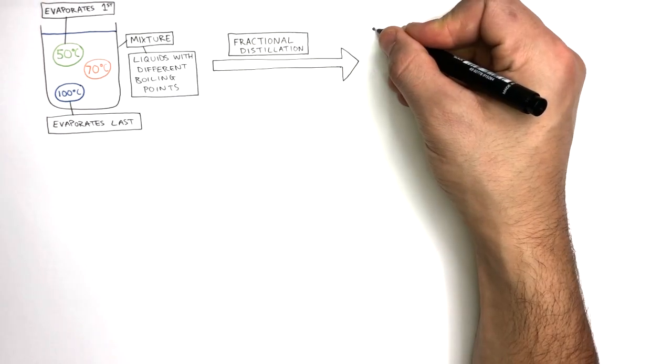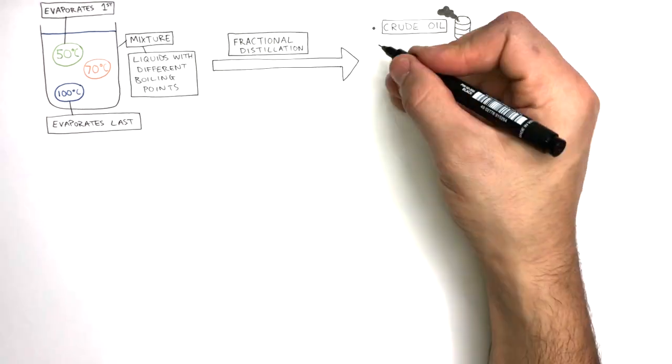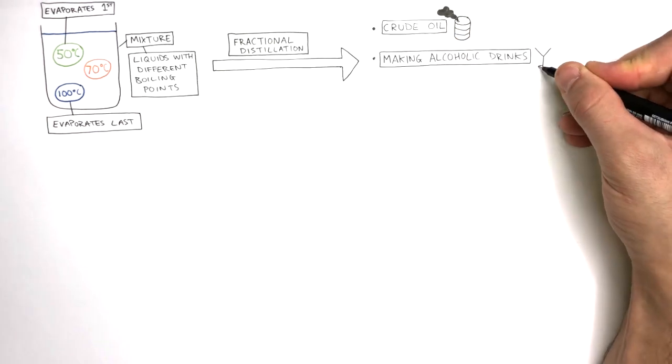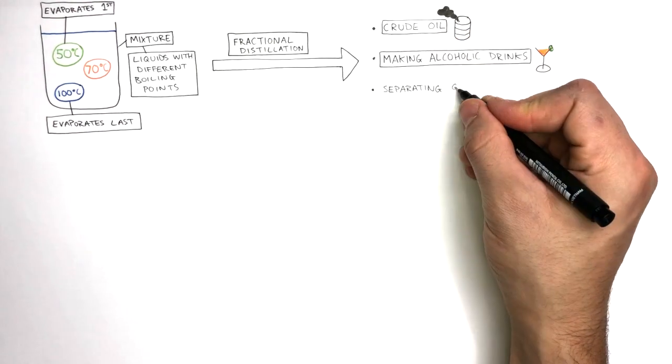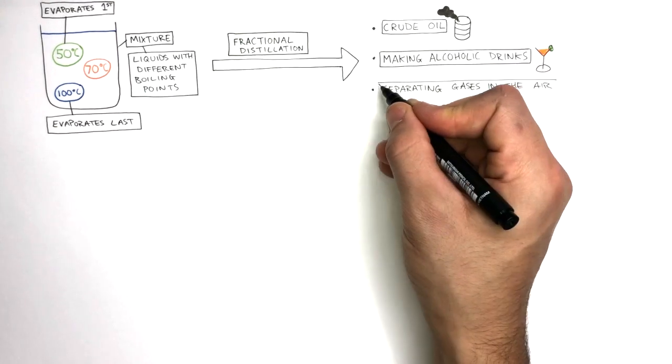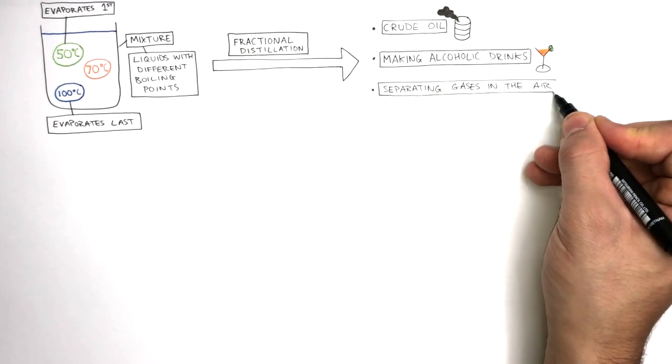Fractional distillation can be used to separate crude oil, it can be used to make alcoholic drinks, and also separating gases in the air, including oxygen, carbon dioxide, nitrogen, water, and so on.